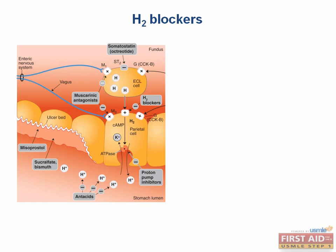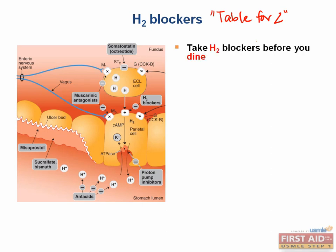The first class we'll talk about are the H2 blockers, or the histamine H2 receptor blockers, and these are an important class of medications. You are likely to confuse them with the histamine H1 receptor antagonists, so a mnemonic that can help you remember these H2 blockers is 'table for two,' since H2 blockers are the GI drugs you would use for eating. Also, there's the mnemonic, 'take H2 blockers before you dine,' to recall the suffix 'dine' that is common to all the drugs.